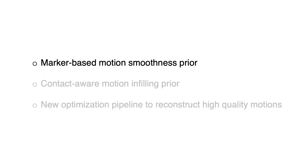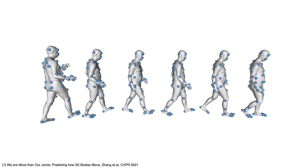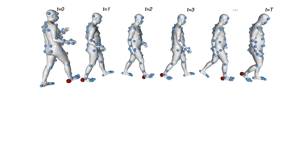First, I will introduce the marker-based motion smoothness prior. Given a motion sequence, we represent the body using a set of body markers on the body surface. For each body marker, we compute its x, y, z velocity for each frame in the global coordinate system.